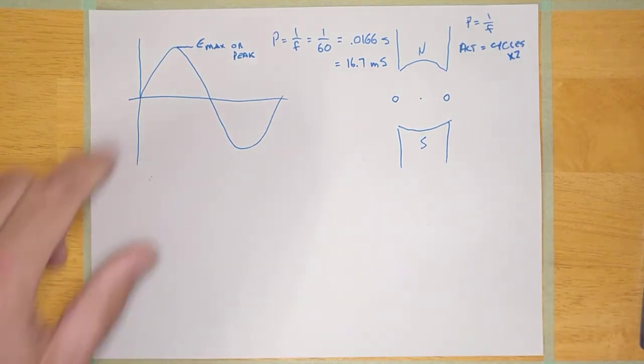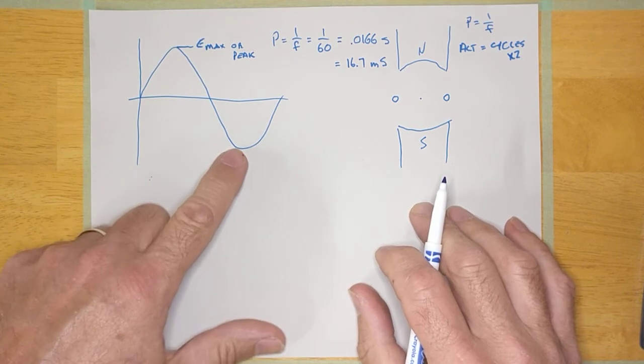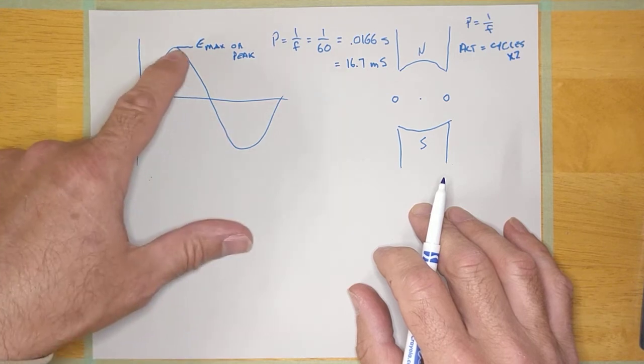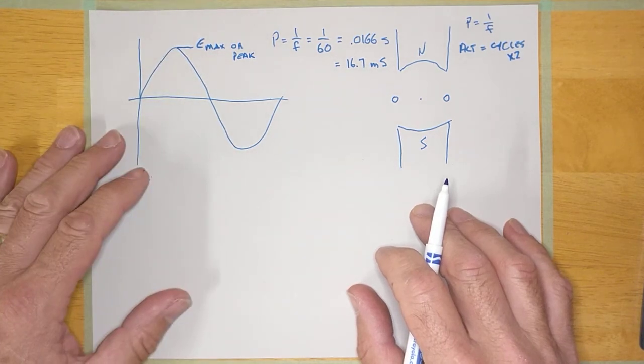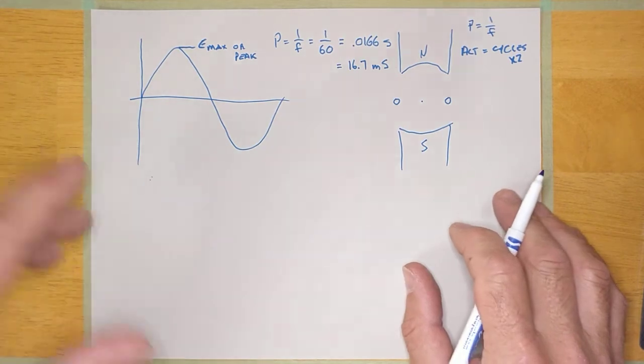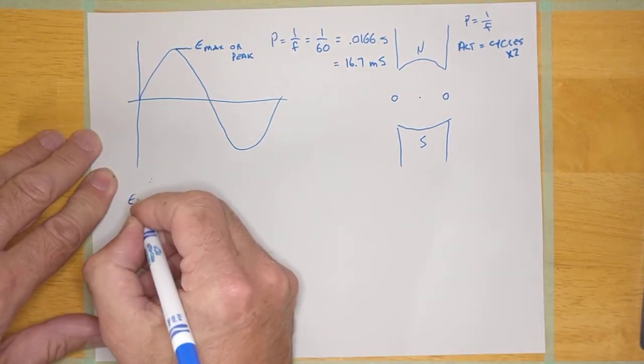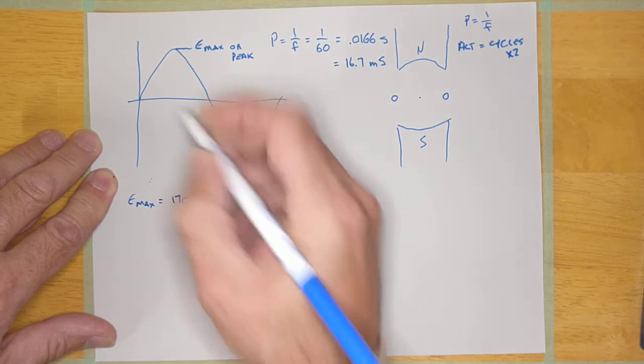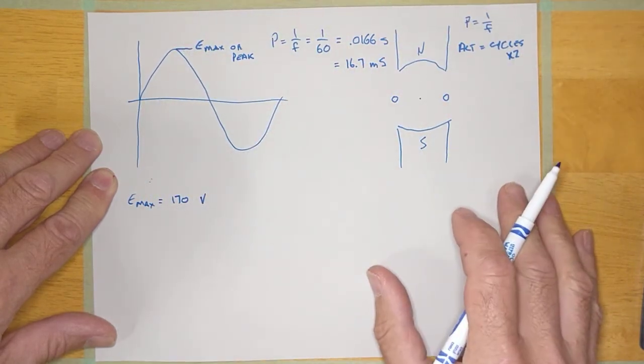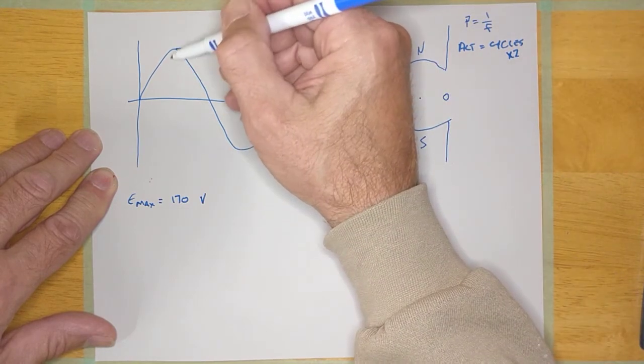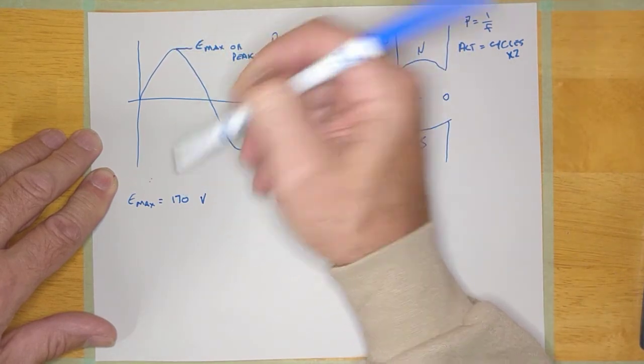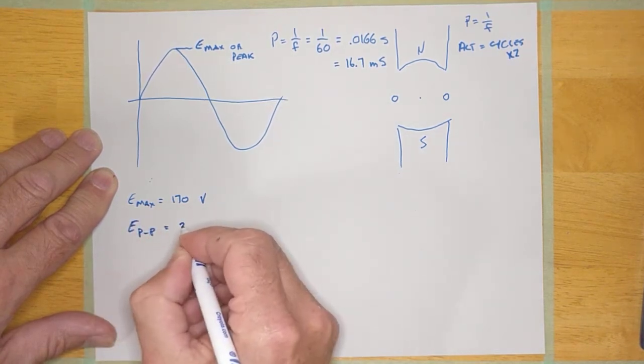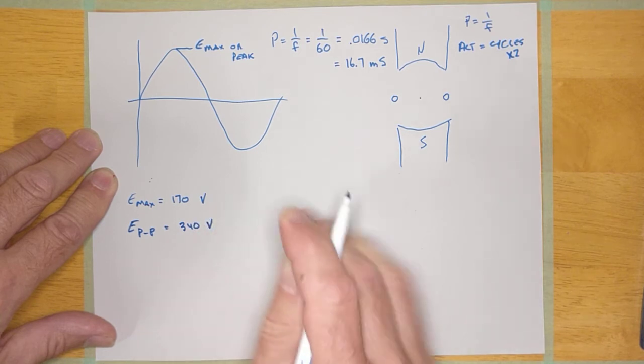Now there's another thing that we could talk about, and that is the peak-to-peak voltage. Now the peak-to-peak voltage is the voltage from there to there. And in an AC sine wave, it is always twice the peak voltage. So if Emax for this guy was equal to 170 volts, in other words, I was looking at a sine wave on a scope and I noticed, count divisions up, notice that the maximum is around 170 volts, then E peak-to-peak would be 340 volts.